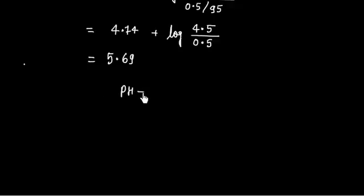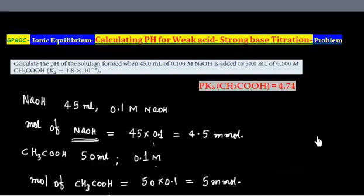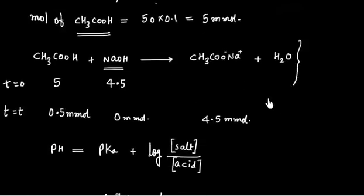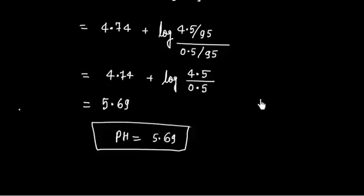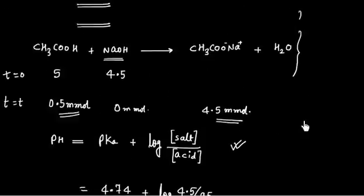So pH of this solution is 5.69. So whenever we have a strong base or weak acid, a strong base, we will use the Henderson-Hasselbalch equation to find the pH value. In this case, first we have to write an equilibrium equation, or this is completion equation, and then we have to calculate mole of salt and mole of acid. And if we plug the value of mole of salt and mole of acid in this equation, we can calculate the pH of resulting solution. So Henderson-Hasselbalch equation is a good idea to solve this kind of problem.